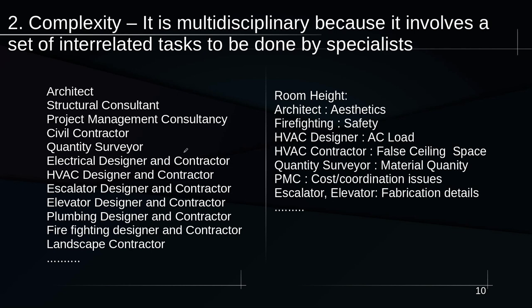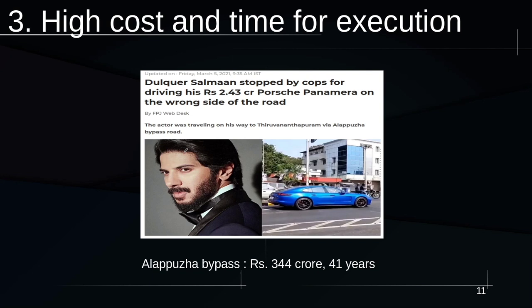The next point is high cost and time for execution. A car costing 2.43 crore rupees is considered high cost. But the Alapura bypass, through which the car was traveling, cost 340 crore rupees and took 41 years to complete. This comparison illustrates the high cost and time involved in executing construction projects.